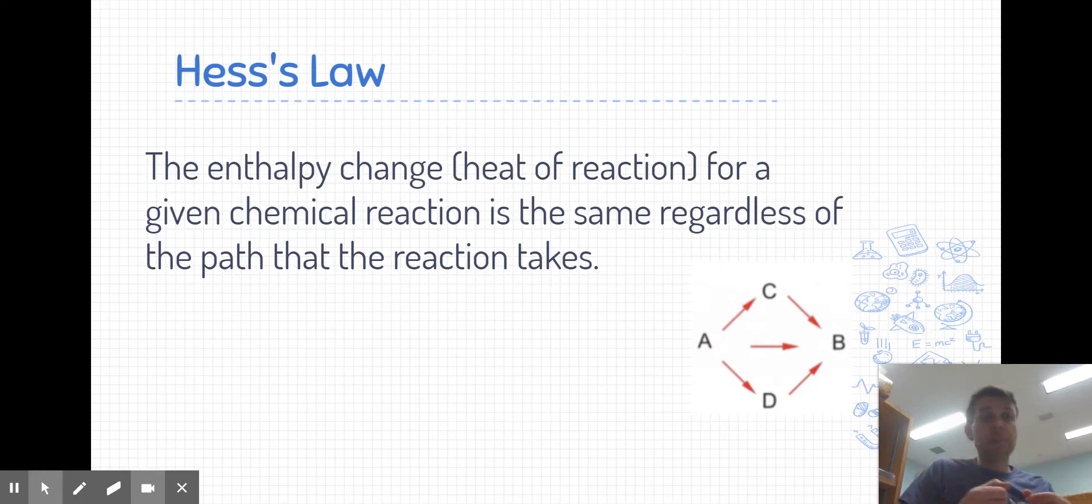For each of those paths, the net change is the same. You start with A and you end with B. What Hess's law states is that if you calculate the overall heat of reaction for any of those paths, they're always going to be the same regardless of the path that you take.